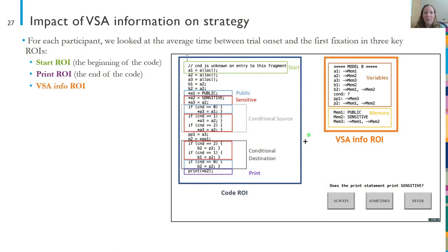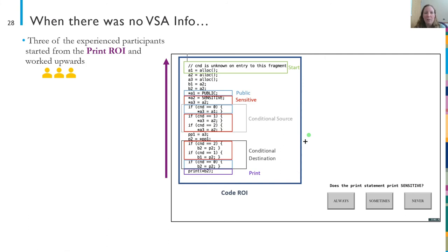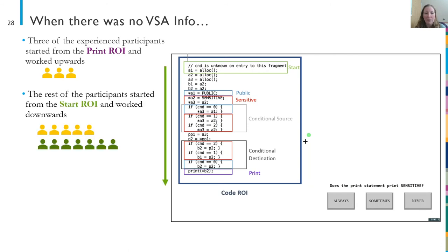Next, we looked at the impact of VSA information on strategy. For each participant, we looked at the average time between trial onset and first fixation in three key regions of interest — the start ROI, the print ROI, and the VSA information ROI. This gives us a general sense of strategy: are they looking to the code first, which way are they working through the code, or are they looking to the VSA information first? When there was no VSA information available, three of the most experienced participants always started with the print ROI and worked their way upwards through the code. The rest of the participants, including all of the less experienced participants, tended to start at the top of the code and work their way downwards, like a traditional reading task.